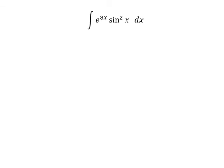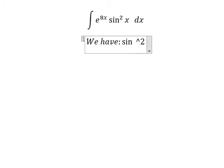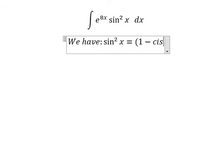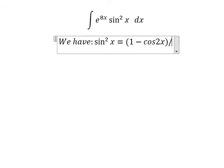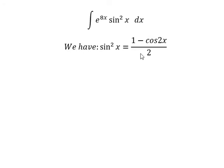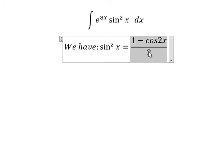Hello everybody. Today I will talk about calculus — the topic is about integration. I will show you how to answer. We have the formula: sin²(x) equals 1 minus cosine(2x) over 2, so we need to change sin²(x) into this form.